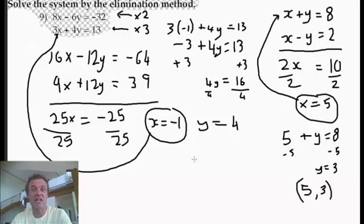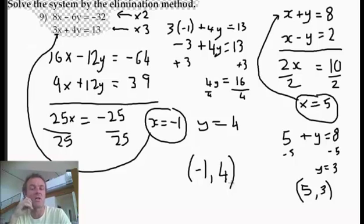So there we go. And again written nicely, negative 1, positive 4. That's the answer there. And if you want to you can put those back into the equations just to check. But that's it, that's the elimination method.